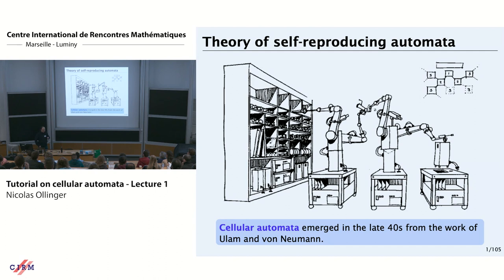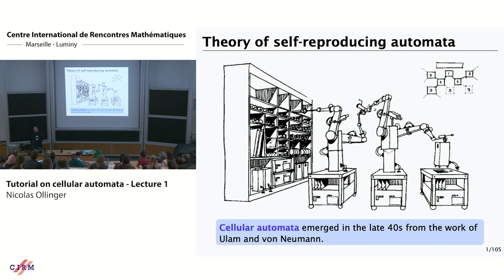Gentle introduction with a historical background: cellular automata were introduced in the 1940s. Some people would say by Ulam, some people would say by von Neumann. I'm not a specialist of the history of mathematics.